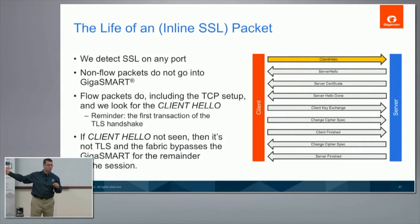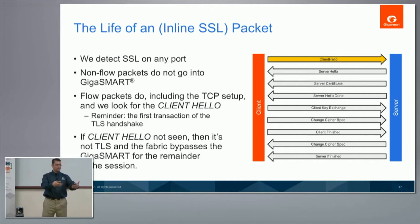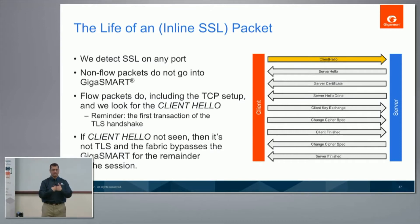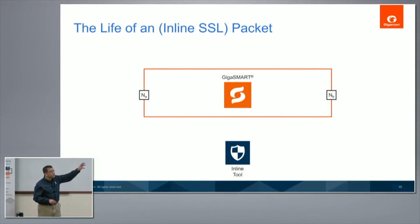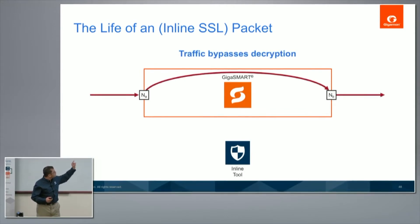I'll briefly go into the life of the packet. Typically in an SSL flow, the client sends a Client Hello — saying 'I'm the client, I want to start SSL, here are the cipher strengths and encryption algorithms I support.' That Client Hello signifies the start of an SSL connection; otherwise it's no different from a TCP packet. You can set flow mapping: all UDP traffic, all ICMP traffic — stuff unrelated to SSL — you bypass from decryption and send straight back.